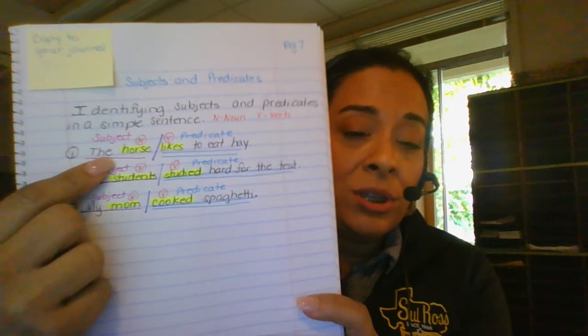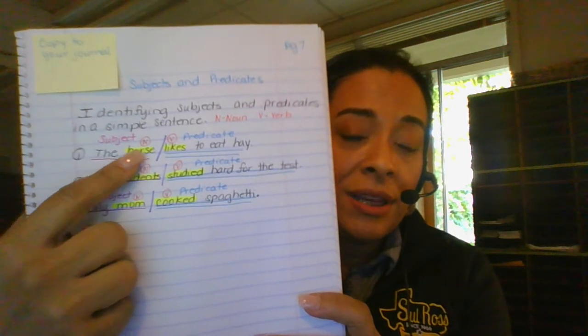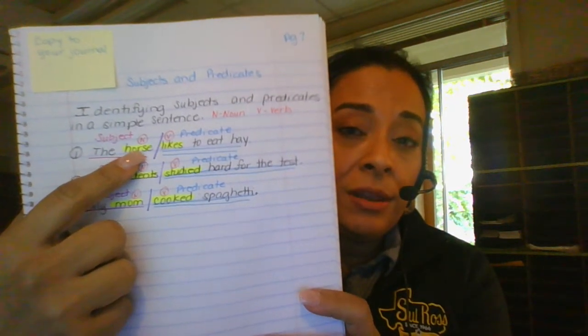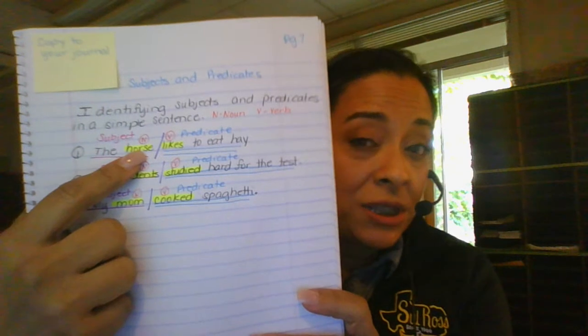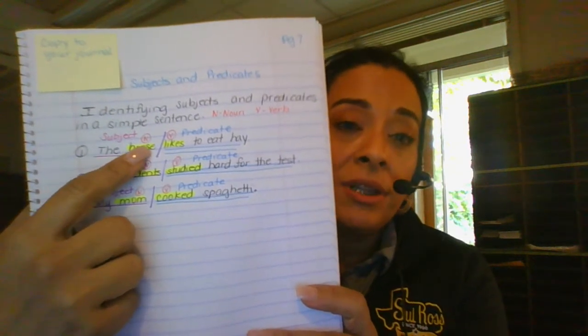So I underlined the subject once, the horse, and identified the subject that we're talking about. The specific subject is horse and that's a noun.